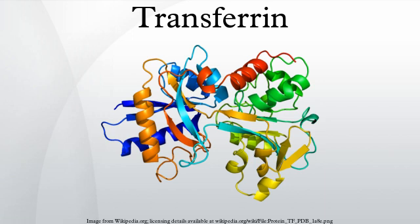Each monomer consists of three domains: the protease, the helical, and the apical domains. The shape of the transferrin receptor resembles a butterfly-like complex, due to the three clearly shaped domains.